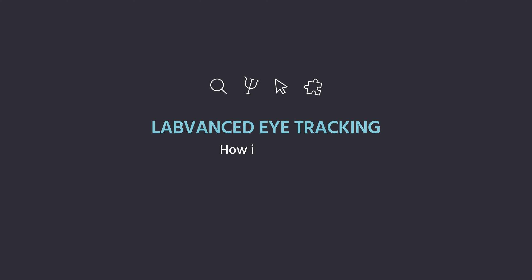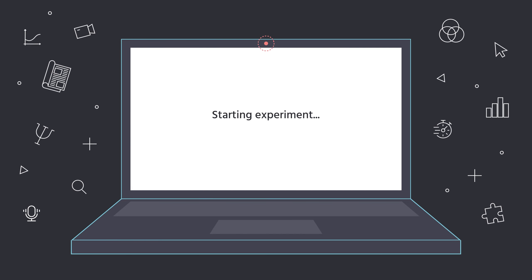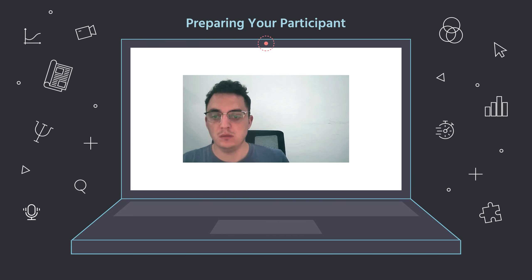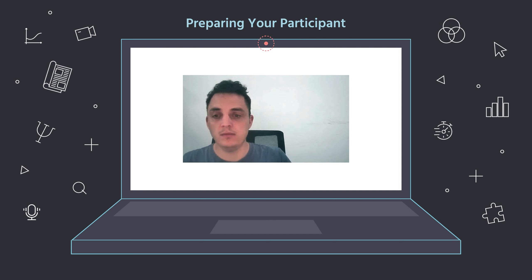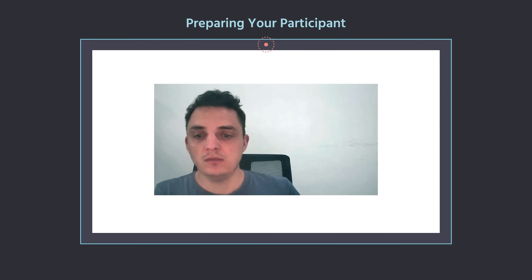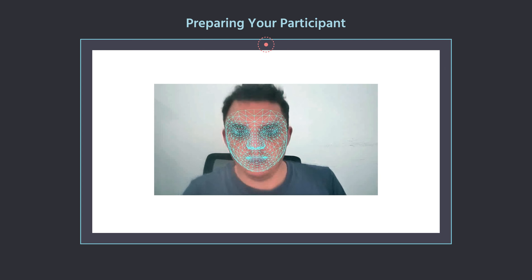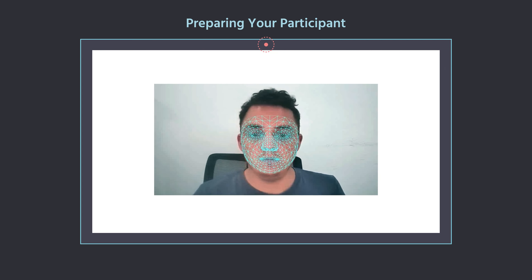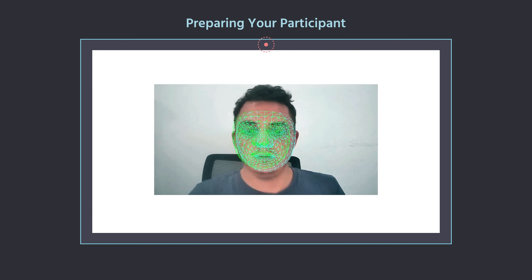So how is eye tracking carried out in Labvanced? Let's go over the technical requirements that make eye tracking possible online. When the experiment begins, your participant is asked to follow some simple steps like being in the middle of the frame, removing their glasses, and aligning with the face mesh to prepare for calibration. Meanwhile in the background, hardware tests are being performed like checking if the participant's CPU speed is up to par.